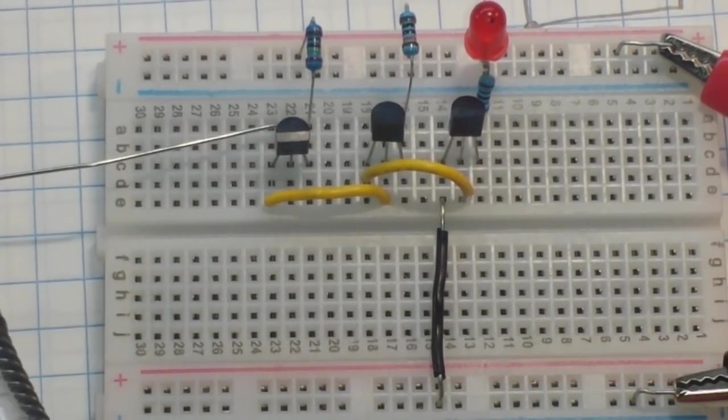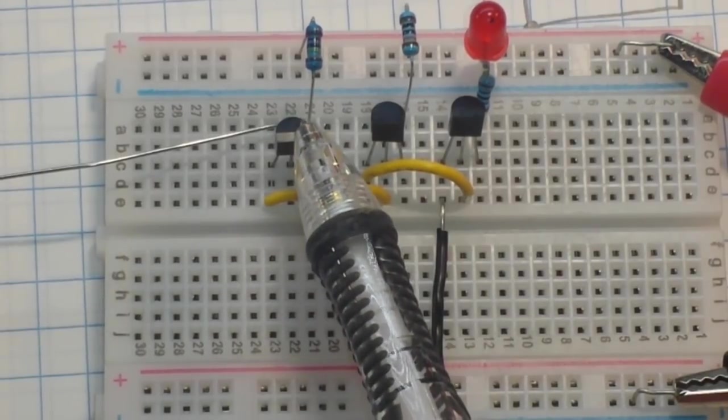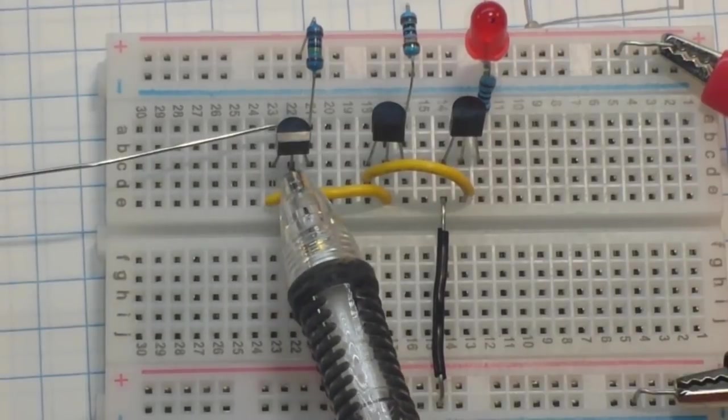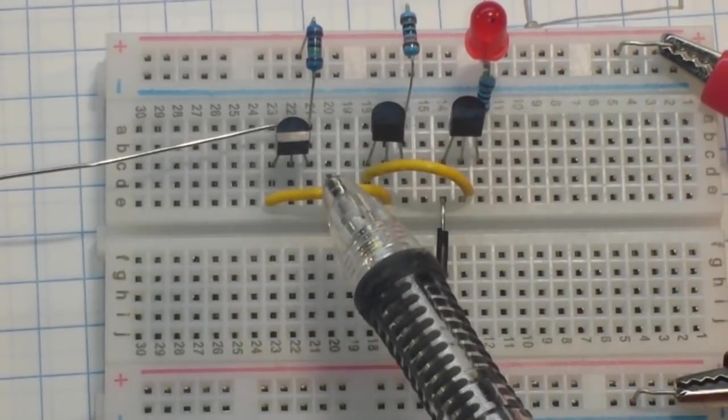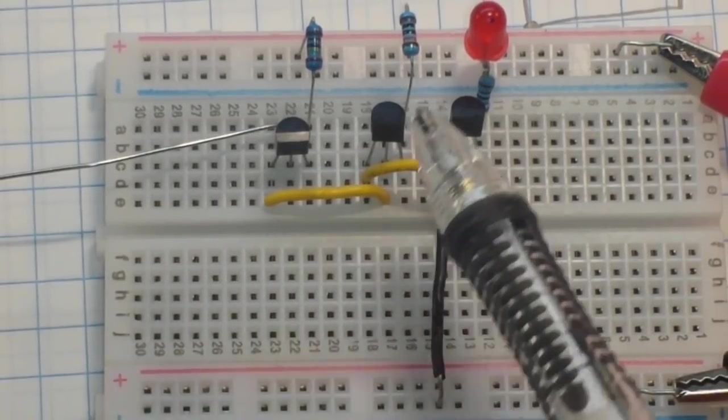All right, so here's our antenna. It's just like a three inch piece of wire. Here's our first transistor, and the antenna goes to the base. There is a one megaohm resistor going into the collector. The emitter feeds the base of the second transistor.